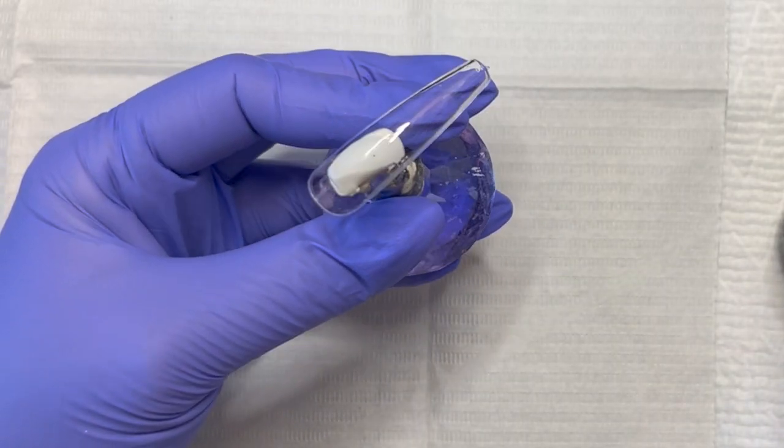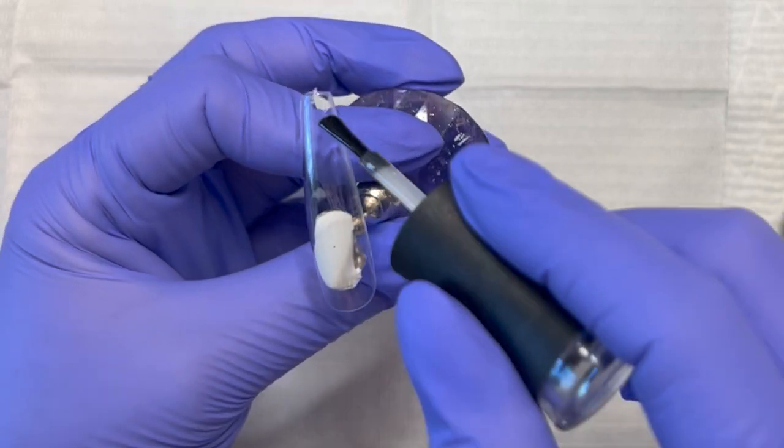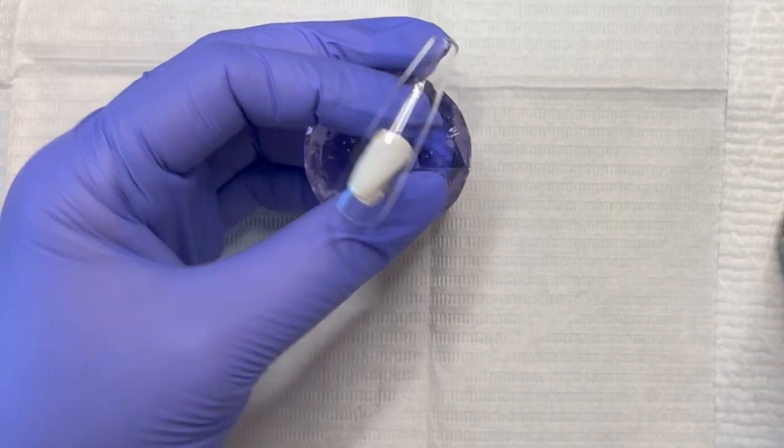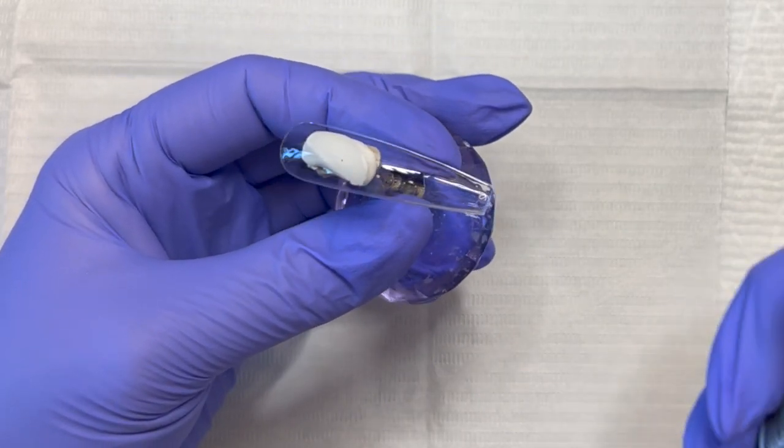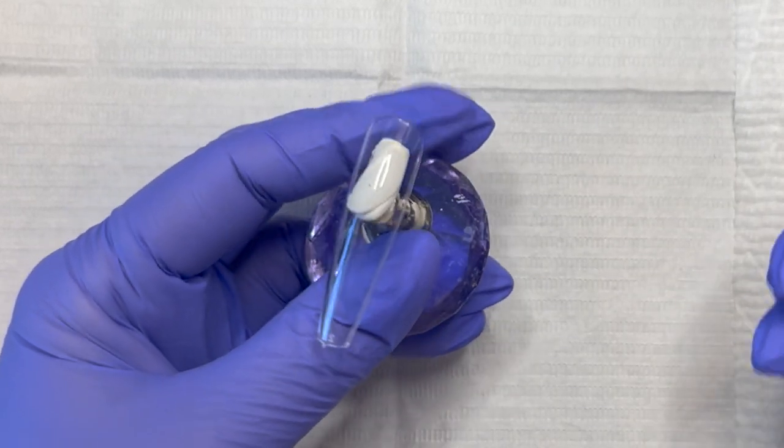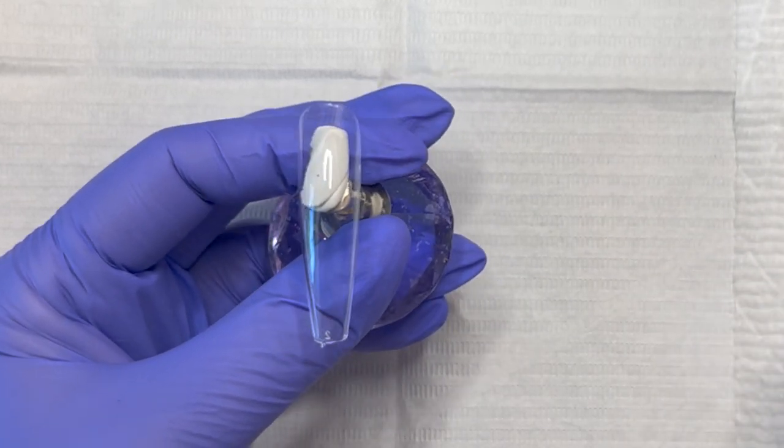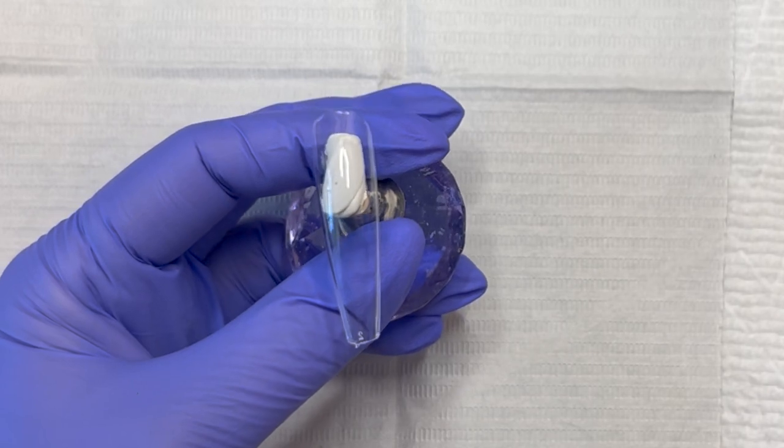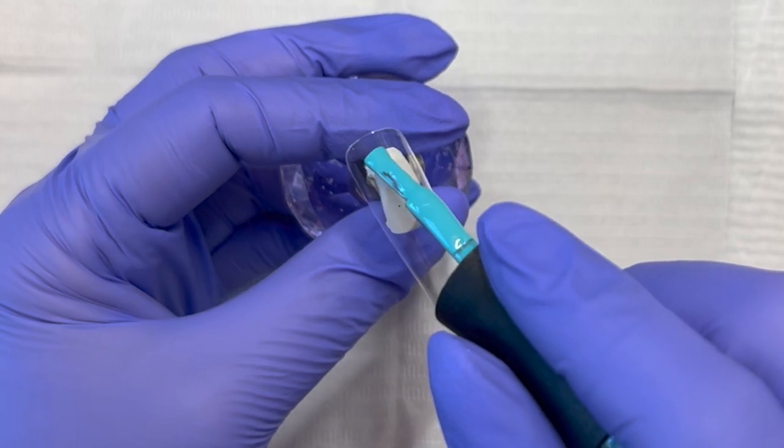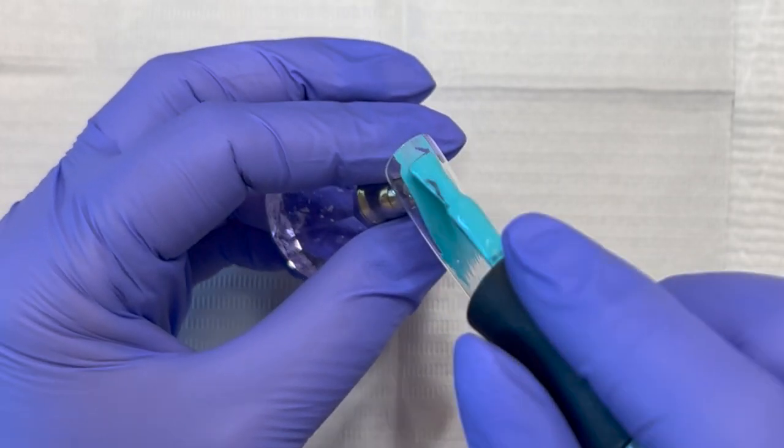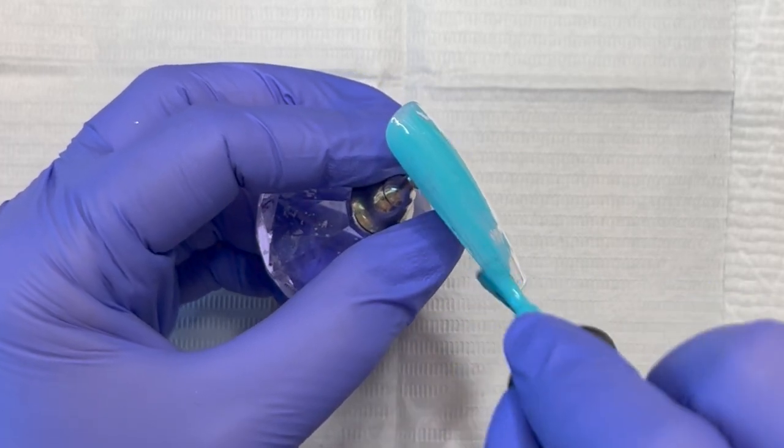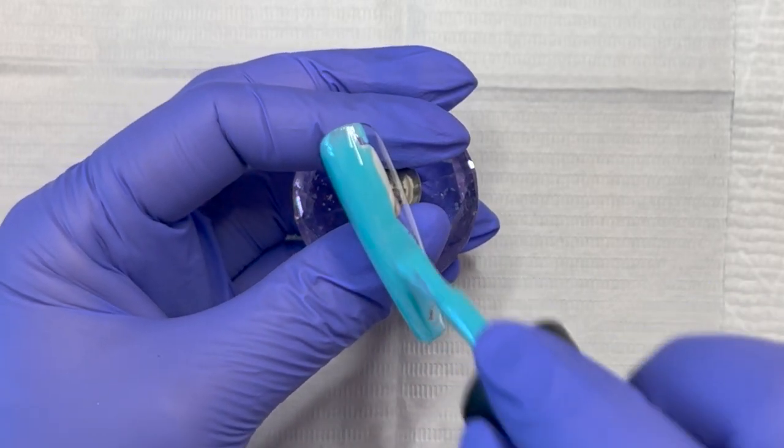Today we're going to be doing another one of the viral nail techniques that's going around right now, and that is the 3D shell technique. You really don't need to have anything special to do it, just some chrome powder if you want a little bit of iridescent magic and some thicker builder gel.